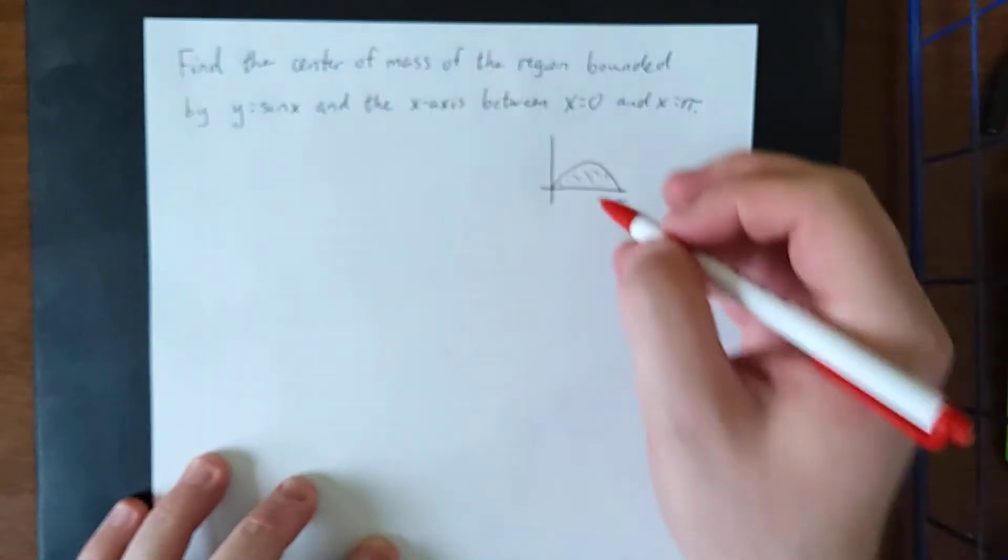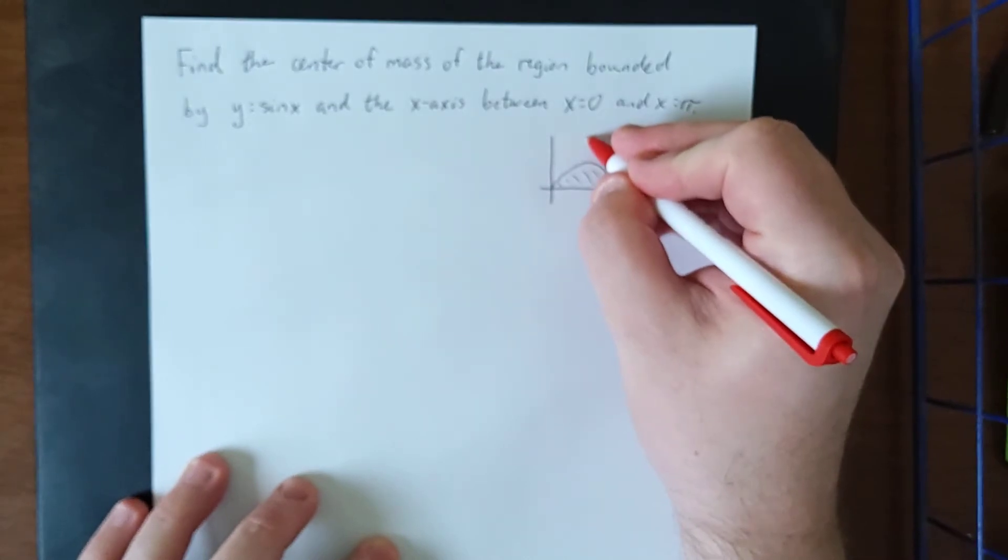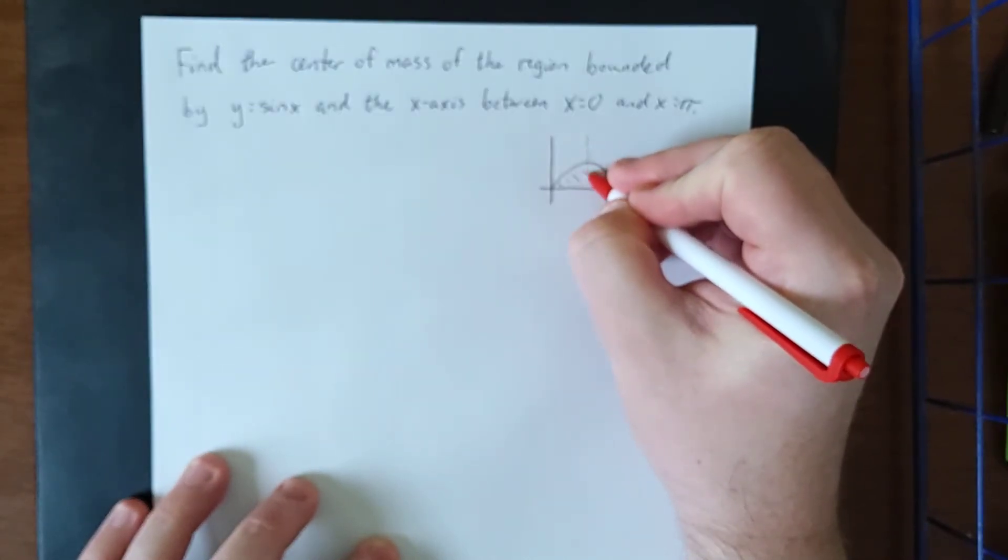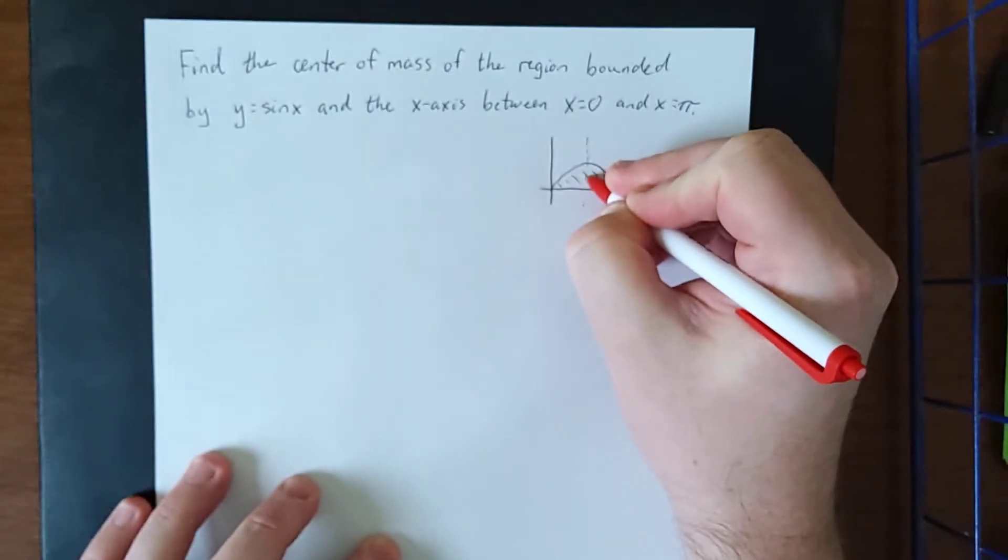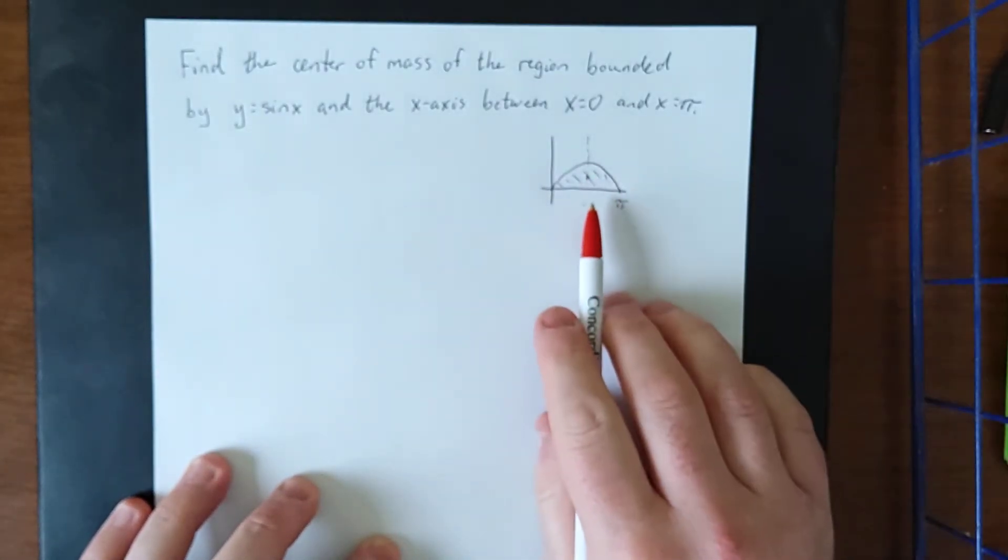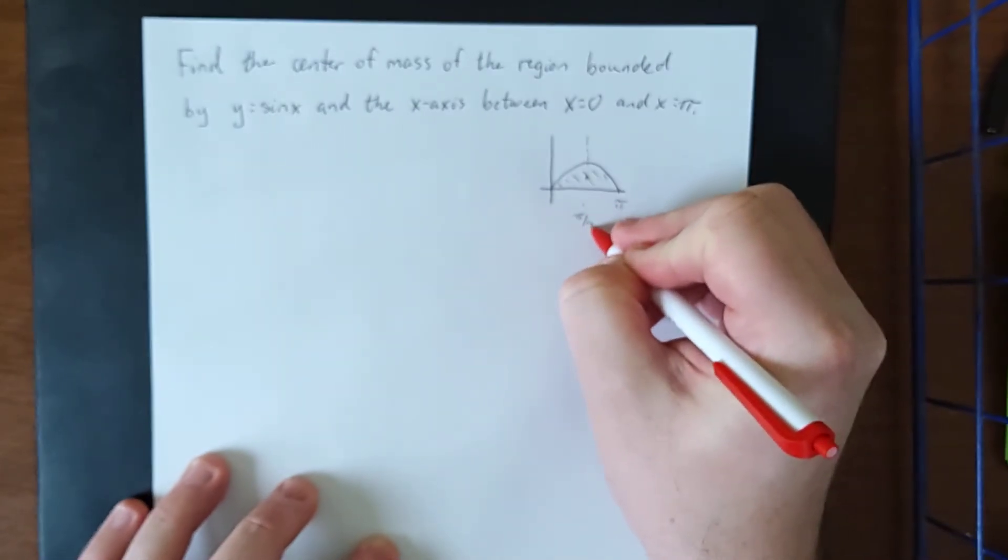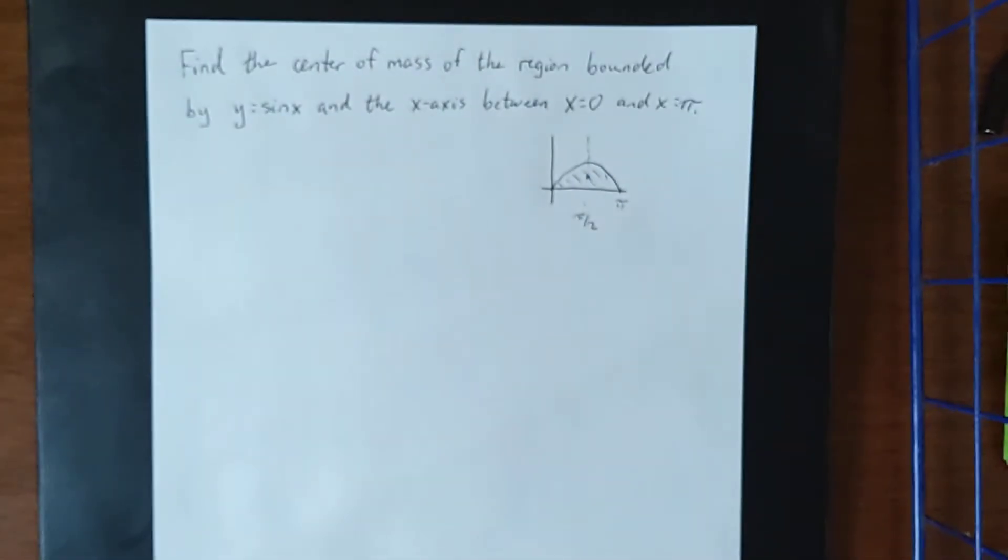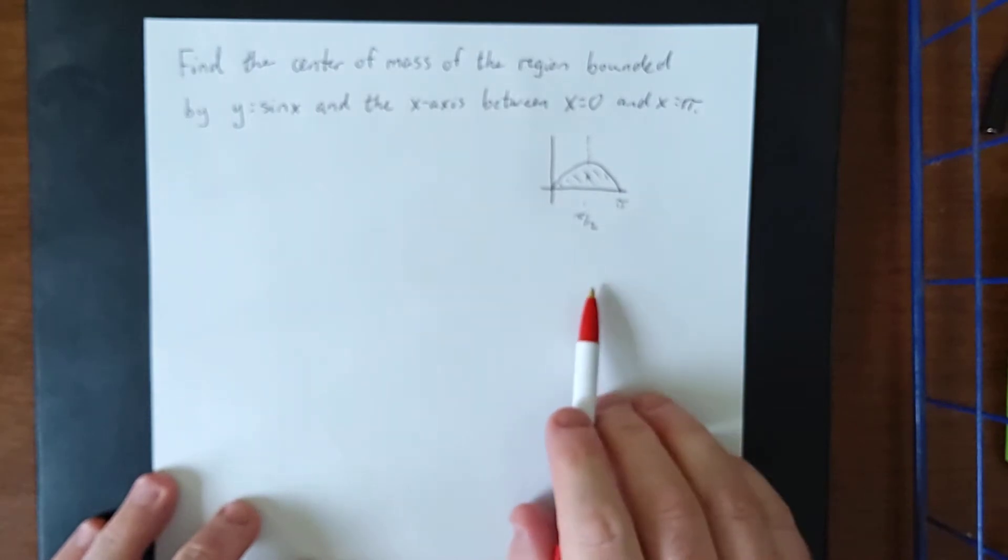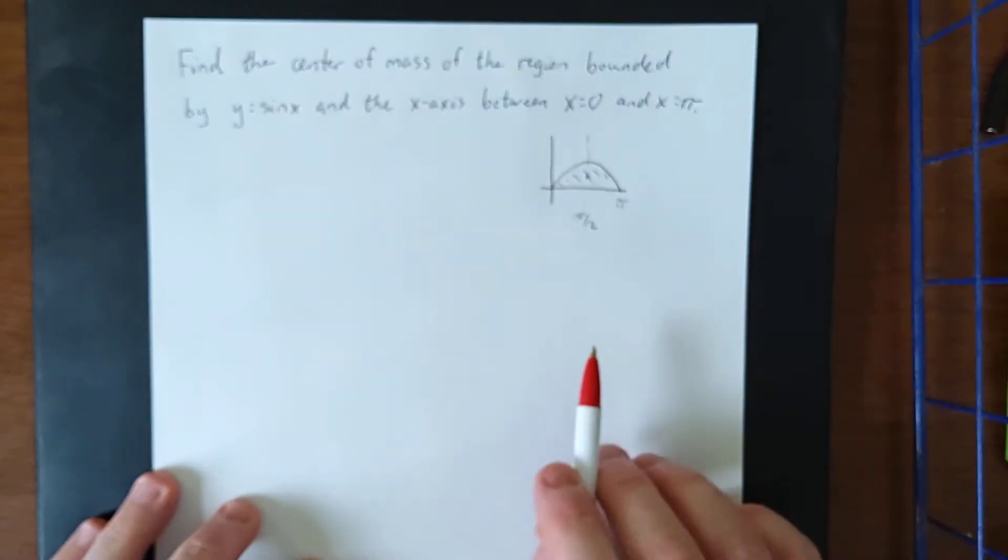Now one thing that we could probably deduce right away is that due to the symmetry of this region, my guess is that the center of mass as far as the x coordinate is concerned is going to be exactly halfway through the region. So my guess is that we're going to get pi over 2 in here. Now we will allow the numbers to show us that we're right though.